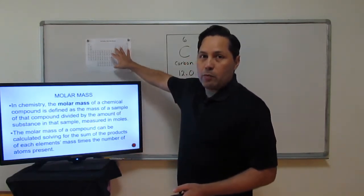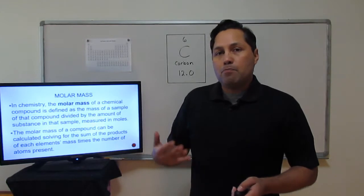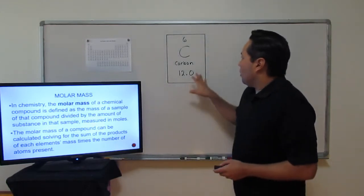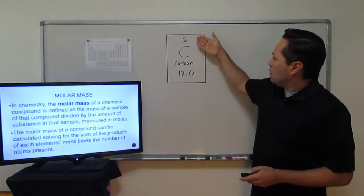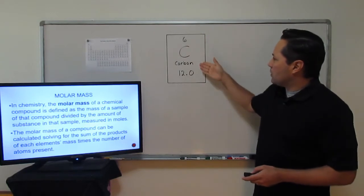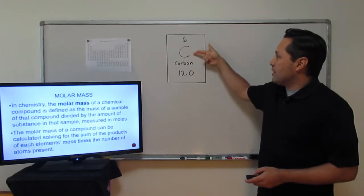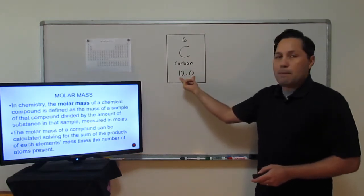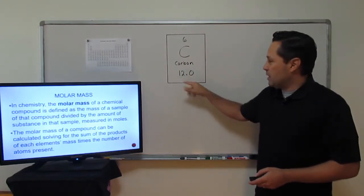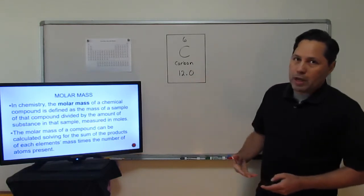We're going to need the periodic table to solve for them. I have a periodic table right here and I'm going to be looking for the mass of each element. On the periodic table, you'll see all the elements listed — at the very top is the atomic number, which is the number of protons; that's the symbol; the name of the element; and the mass of the element. That mass is the number we'll be looking for when we solve for the molar mass.